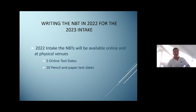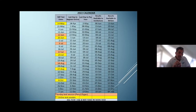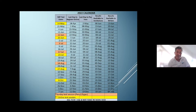When will you write the NBTs? For the 2022 intake, the NBTs are available online and at physical venues. This year, with COVID regulations relaxing, we've expanded the number of pencil-and-paper tests — we now have five online test dates and 20 pencil-and-paper test dates. The online test dates, highlighted in yellow on the calendar on our website, commence on the 14th of May through to the last online session on the 8th of October. All other test dates are pencil-and-paper sessions, with those in pink being Sundays.